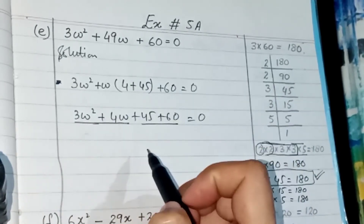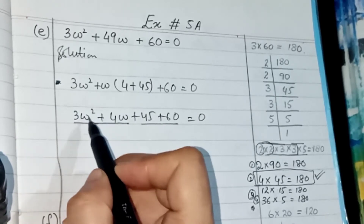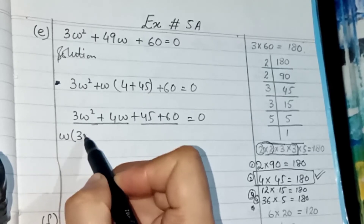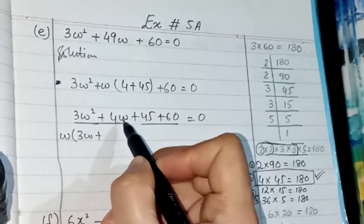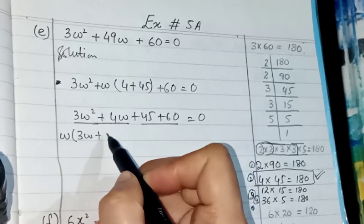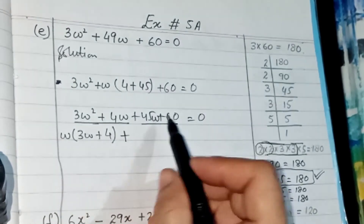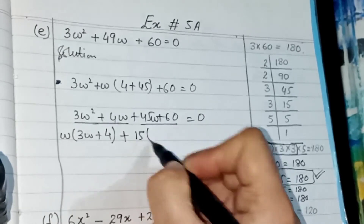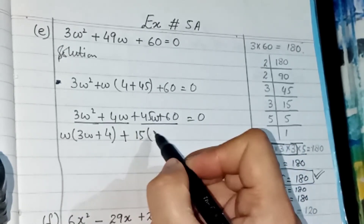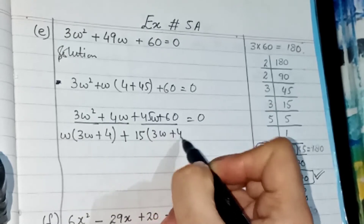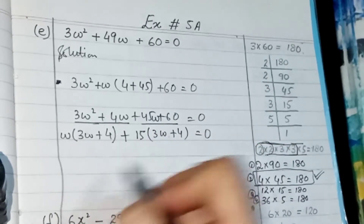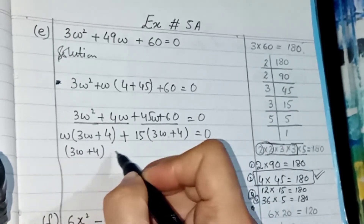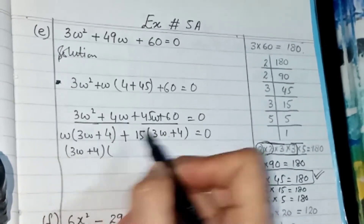Now we make two pairs and take common factors from each pair. From the first pair we can take only w as common, leaving 3w plus 4. From the second pair we take 15 as common, leaving 3w plus 4. Since both brackets are exactly the same, we write it once and form the other bracket from the two outer terms.